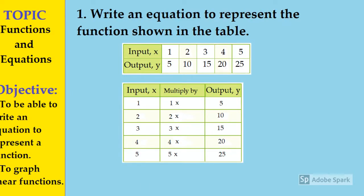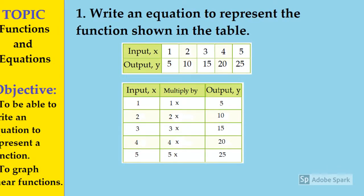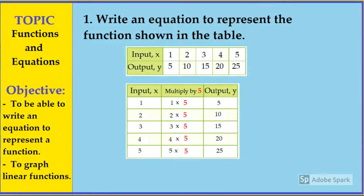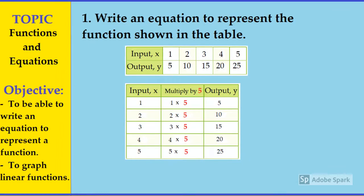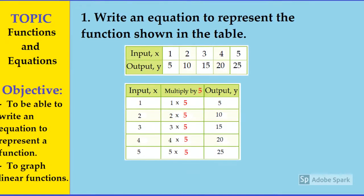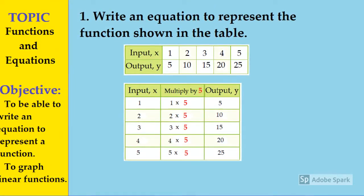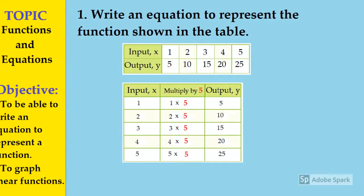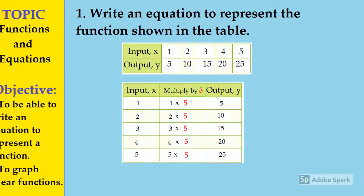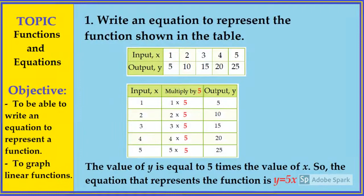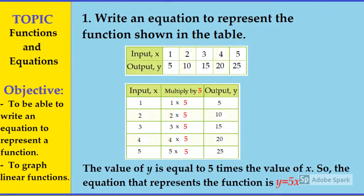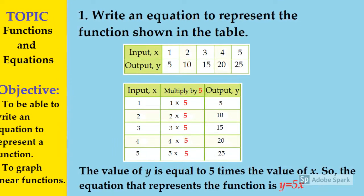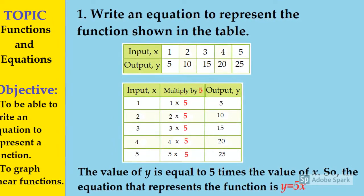10; when the input is 3, the output becomes 15, and so on. Did you find out why? We multiply the input by 5. Check it: 1 times 5 is 5, 2 times 5 is 10, 3 times 5 is 15, 4 times 5 is 20, and 5 times 5 is 25. So the equation is: the value of y is equal to 5 times the value of x. Therefore, the equation that represents the function is y = 5x.